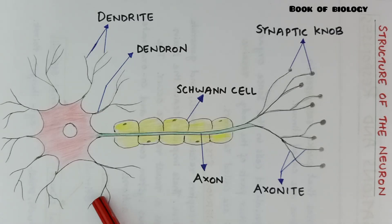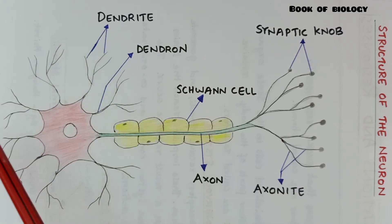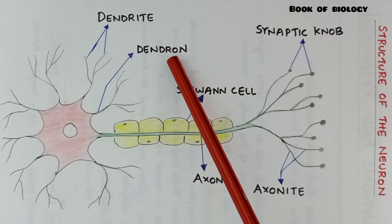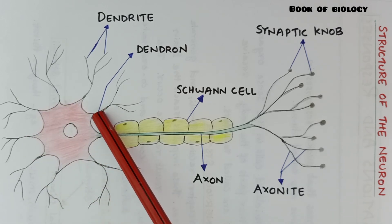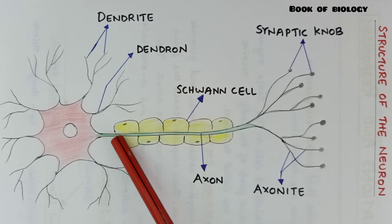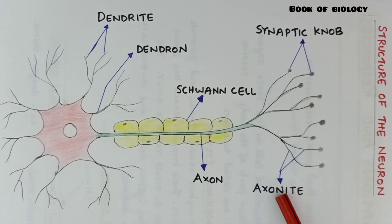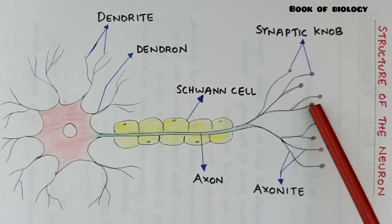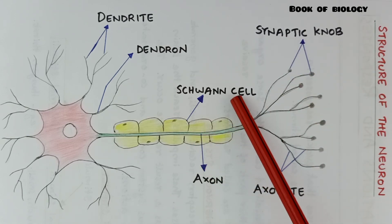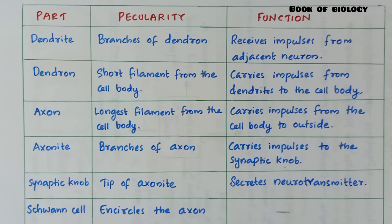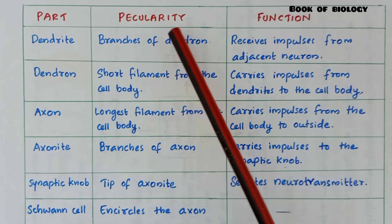Next, you can draw the structure of a neuron. You can see different parts like dendrite — these branches are known as dendrites, and dendrites are the branches of the dendron. You can see the main part, that is the dendron. So dendron divides and forms branches called dendrites. It is easy to study if you prepare a table with three columns: part, peculiarity, and function.